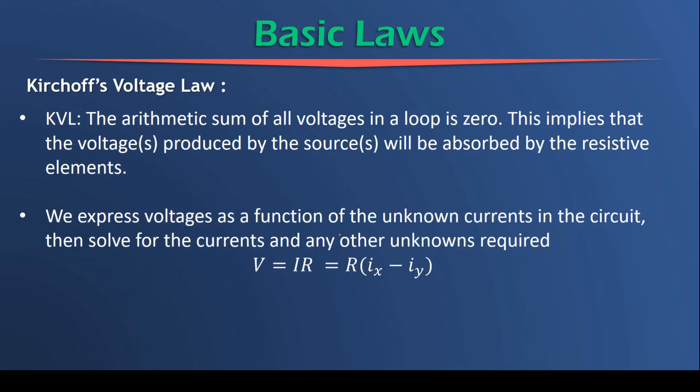We express the voltage as a function of the unknown currents in a circuit. If this was Vs, this is R1, this is R2, we would express the voltages as a function of the currents and the resistances. So if we call this I, and we did a KVL in this loop, we would say we start off with Vs, so negative Vs.